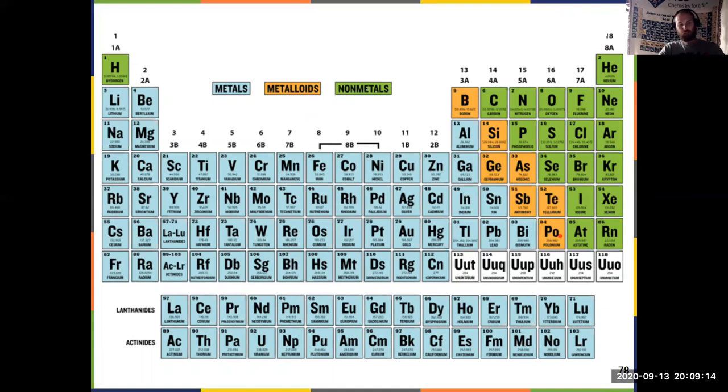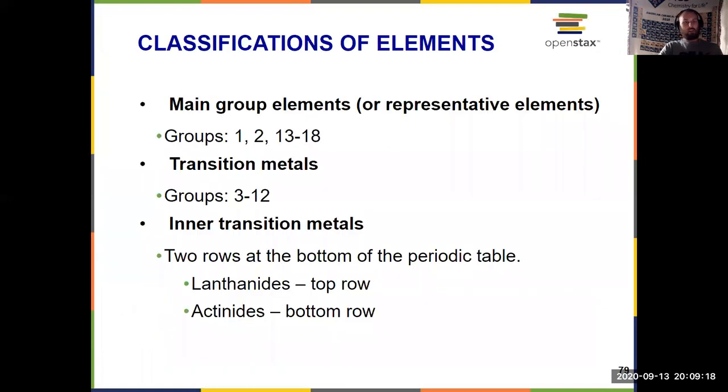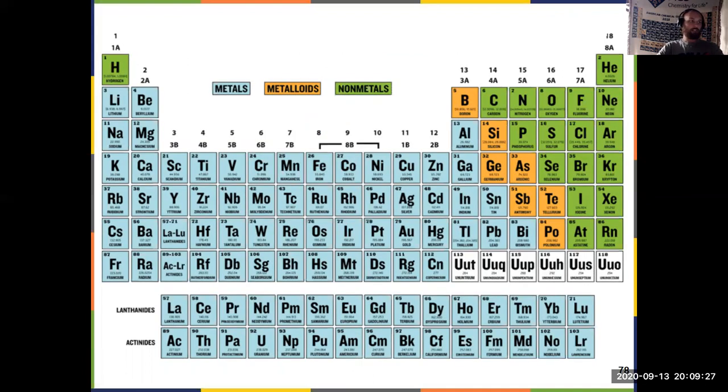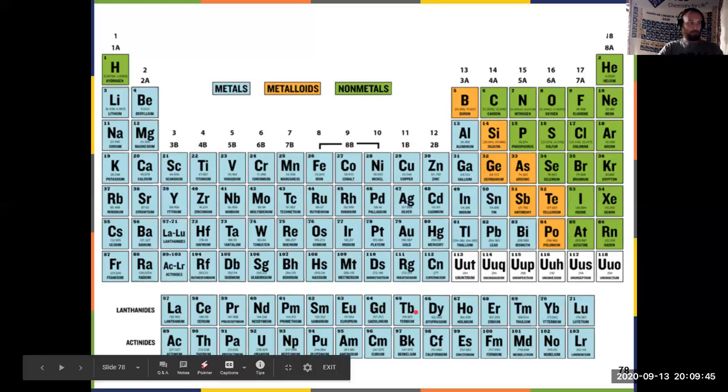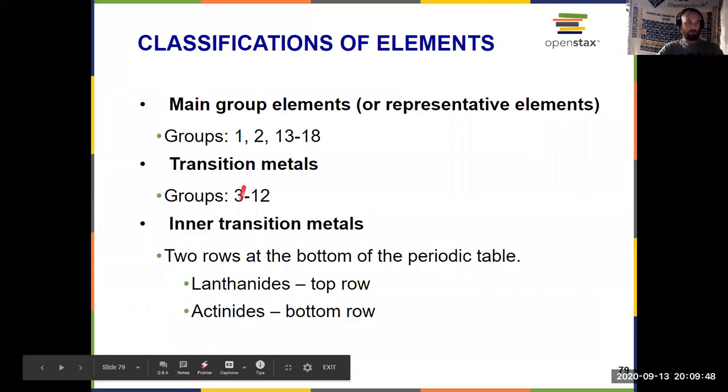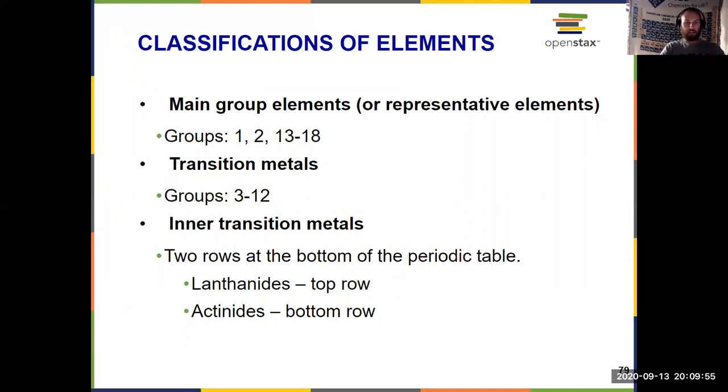But we can actually further break them down than just metals, non-metals, and metalloids. We have what are called main group elements. Those are groups 1 and 2 and 13 through 18. So if I jump back a slide, it's the towers on the side. So 1 and 2 stick up, and then 13 through 18. Those are main group elements. We'll see what's significant about those in Chapter 6. In the middle here, groups 3 through 12, we have transition metals. And in the bottom here, we have what are called inner transition metals. The top row is often called the lanthanides, the bottom row, often called the actinides, named after the elements that start that row.